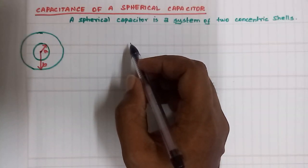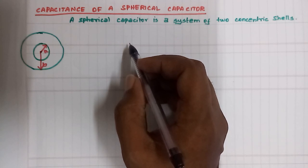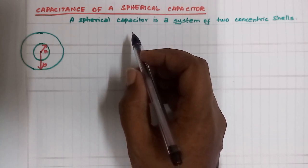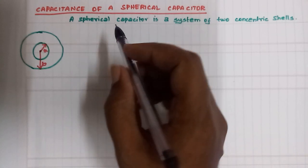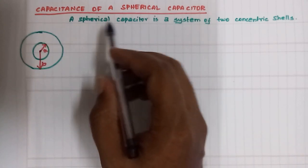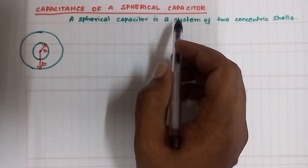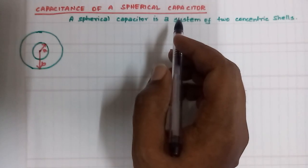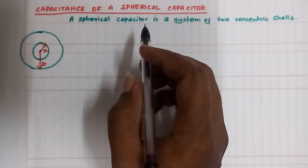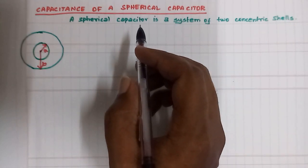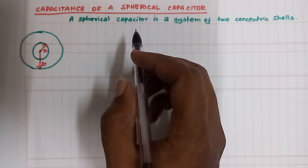This is the NET and JEE exam preparation for students — Helping Notes. This is the 5th lecture on Capacitance, covering the Capacitance of a Spherical Capacitor. This is part of the Capacitance playlist.